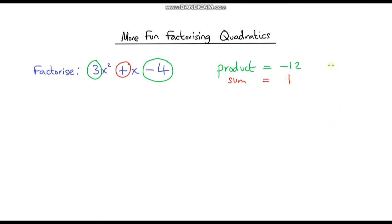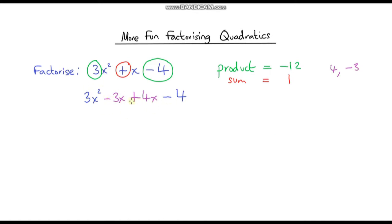Those two numbers are 4 and negative 3: 4 times negative 3 is negative 12, and 4 minus 3 is 1. So I'm going to rewrite the expression, but instead of writing plus x, I'll write plus 4x minus 3x. I've put the negative 3x first and the positive 4x after because it makes it easier to factorize, grouping the threes and fours together.